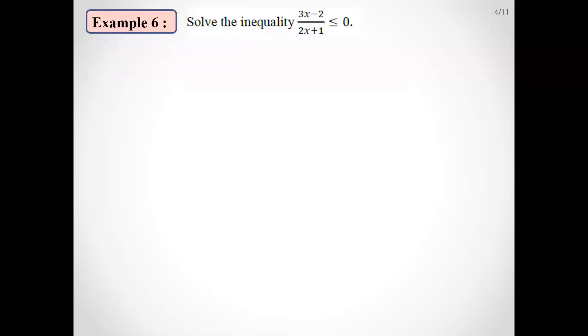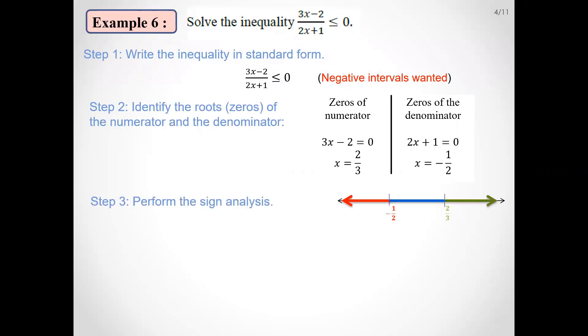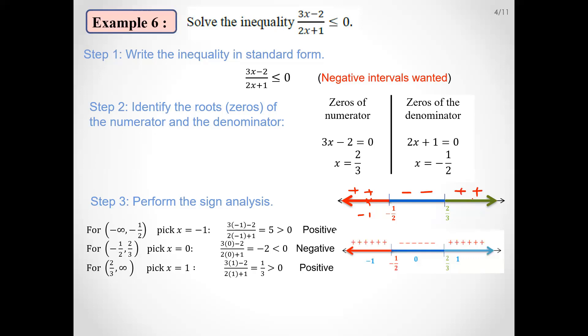Step by step. First step, standard form. It's already in standard form, so we want negative intervals. Identify the roots or zeros of the numerator and denominator. Perform the sign analysis. Pick any value, he picked minus 1 and found plus, then picked 0 and found negative, then picked 1, positive. Write the solution in interval notation. Here be careful, we have to open, then x must be different from minus half.